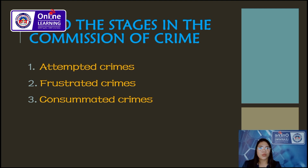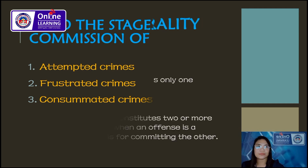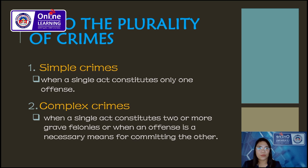Third, consummated crimes — when all the elements necessary for the execution and accomplishment of the crime are present. Ibig sabihin, ang intention mo ay patayin siya, gusto mo siyang saksakin, and nung sinaksak mo siya namatay siya — natupad yung intention mo. That is consummated crimes. Next, as to the plurality of crimes. Simple crimes — it is when a single act constitutes only one offense. For example, sinaksak mo, namatay — homicide. Complex crimes, on the other hand, is when a single act constitutes two or more grave felonies, or when an offense is a necessary means for committing the other. Usually, yan yung kidnapping then afterwards papatayin — those are complex crimes.